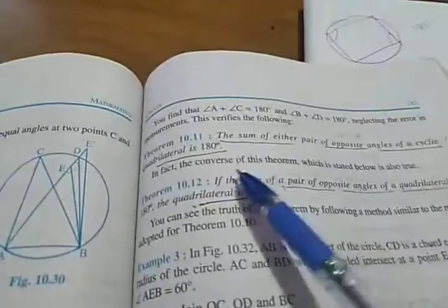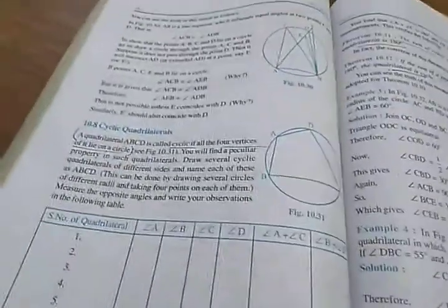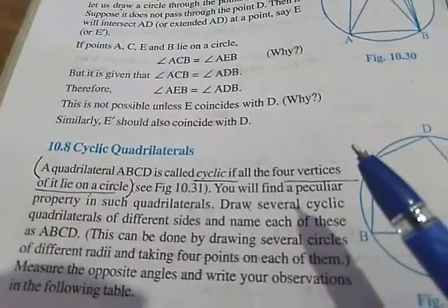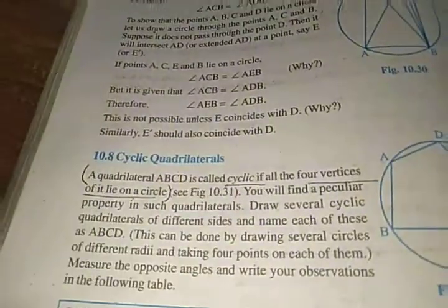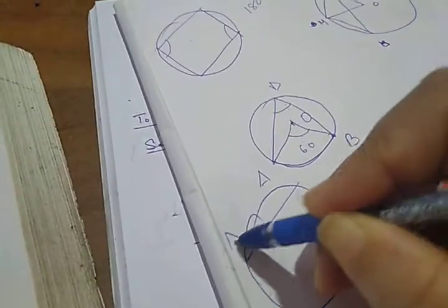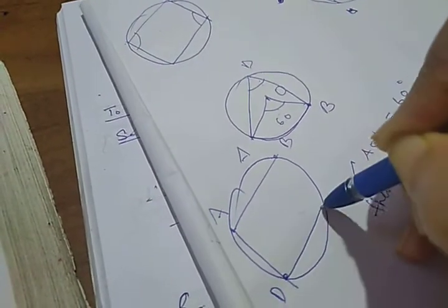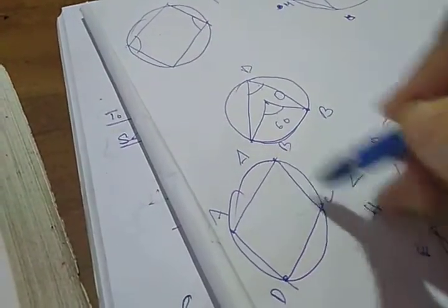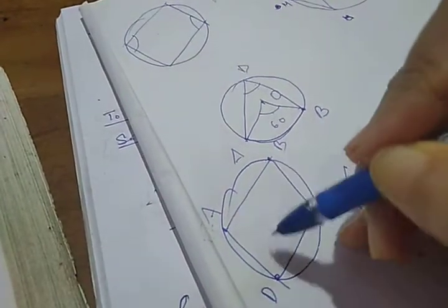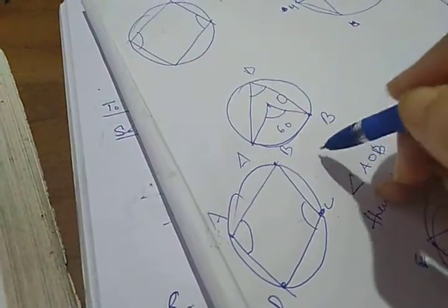Another theorem: the sum of either pair of opposite angles of a cyclic quadrilateral is 180 degrees. A quadrilateral ABCD is called cyclic if all four vertices lie on the circle. So here, vertices A, B, C, D all lie on the circle, forming a cyclic quadrilateral. One property of a cyclic quadrilateral is that the sum of opposite angles equals 180 degrees. These are the theorems I am going to use to solve exercise 10.5.